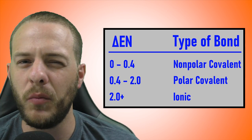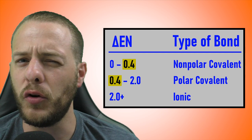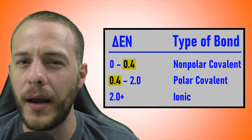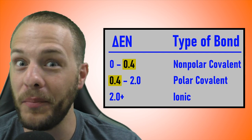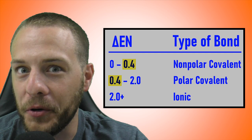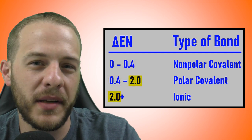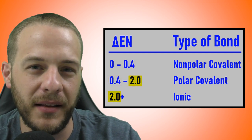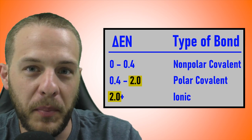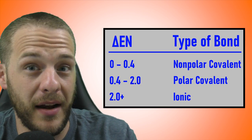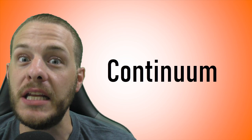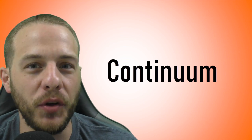You may be asking yourself: what if delta En is exactly 0.4 — would that be a nonpolar covalent bond or a polar covalent bond? Or what if delta En is exactly 2.0 — would that be a polar covalent bond or an ionic bond? It's important to understand that these categories are not rigid, discrete categories. They exist in a continuum. However, they are still useful.